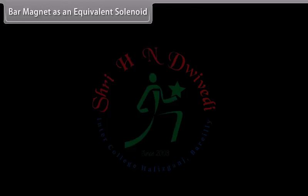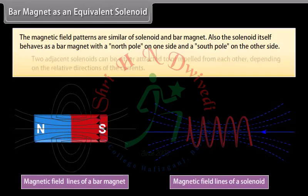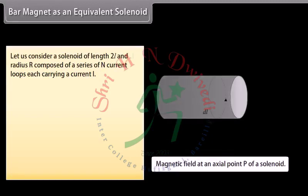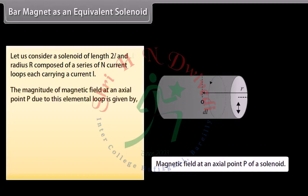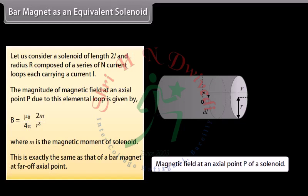Bar magnet as an equivalent solenoid: The magnetic field patterns of a solenoid and bar magnet are similar. The solenoid itself behaves as a bar magnet with a north pole on one side and a south pole on the other. Two adjacent solenoids can either attract or repel each other depending on the relative directions of the currents. The magnitude of magnetic field at an axial point P due to an elemental loop is given by (μ₀/4π) × (2M/R³), where M is the magnetic moment of the solenoid. This is exactly the same as that of a bar magnet at a far off axial point.